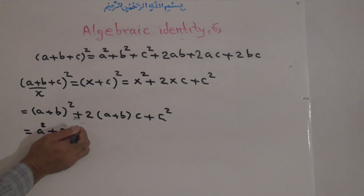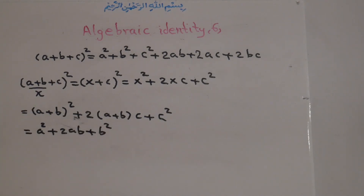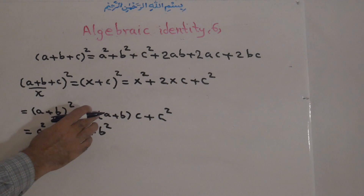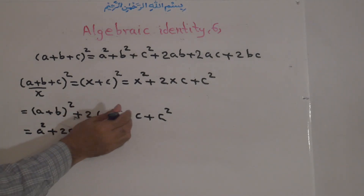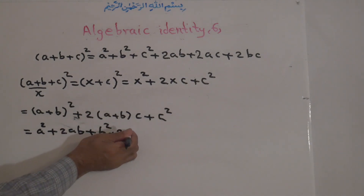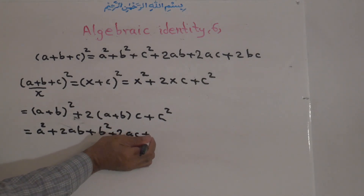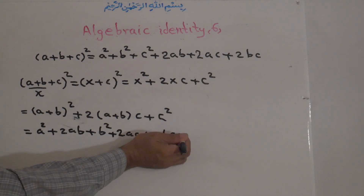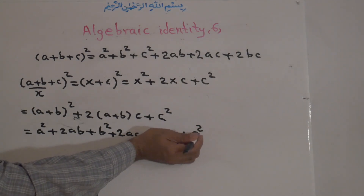A plus B to the power of 2. Now from here, 2 times A plus B times C, and it's 2C times A plus B. That is plus 2AC, and 2 times B times C is 2BC.